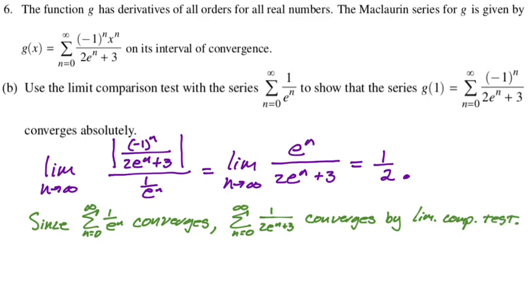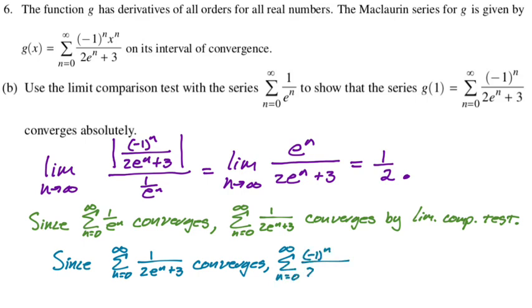Then we can say, since this series converges, since 1 over 2 e to the n plus 3 converges, we know that the original series converges absolutely, because when you take the absolute value of its terms, you get a convergent series. So this is how you go about doing that. It's kind of like a—first we had to use a limit comparison test, so that's interesting. But then once we showed that 1 over 2 e to the n plus 3 converges, we know that the other one converges absolutely. So we got that. Alright, this is like a good, interesting series question so far. Let's see what the next part has for us.